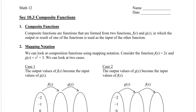Let's begin with mapping notation. We can look at a composite function using mapping notation. Let's consider the function f of x equals 2x and g of x equals x squared plus 3.